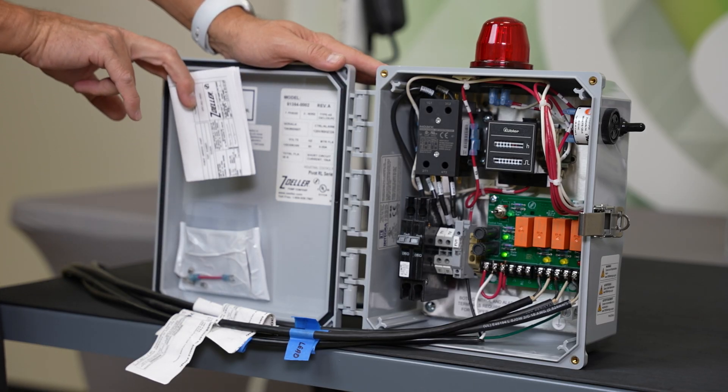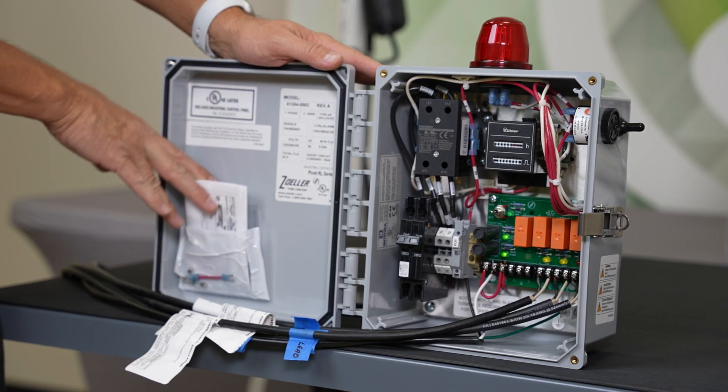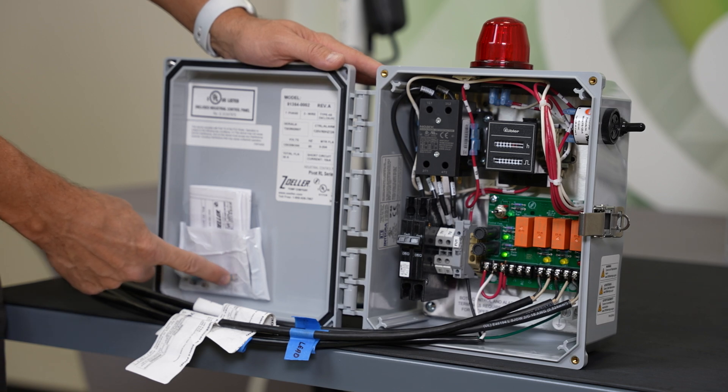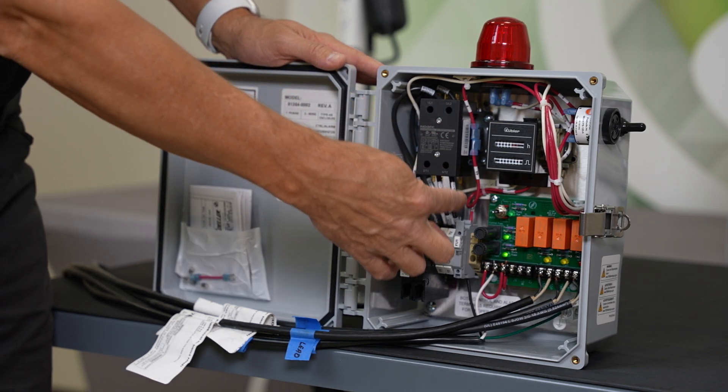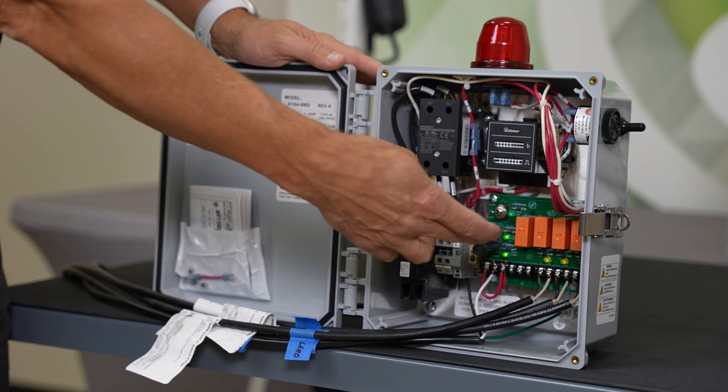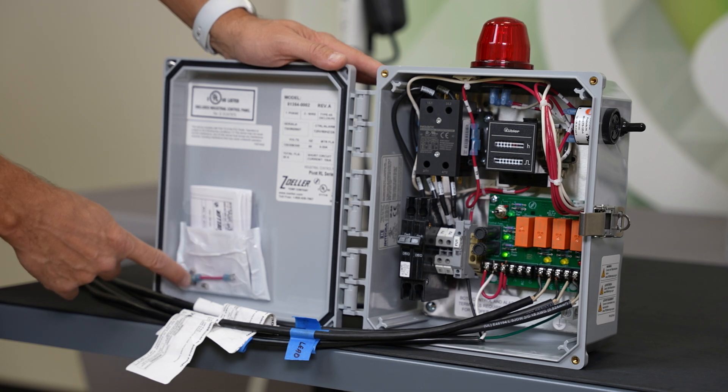Included with the panel, there's of course a wiring diagram, and then also there's a jumper wire in case you need to jumper circuits here or float switches. And there's also two spare fuses.